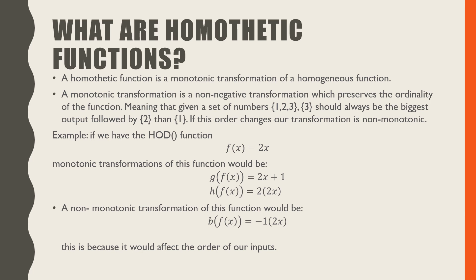For example, if we have a homogeneous of degree 1 function which would be f(x) = 2x, monotonic transformations would be 2x + 1 or 2x × 2. A non-monotonic transformation of this function would be -1 × 2x, because it would affect the order of our inputs.